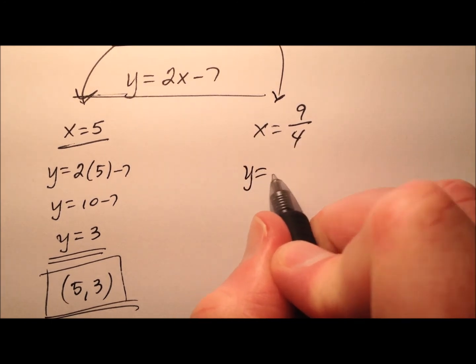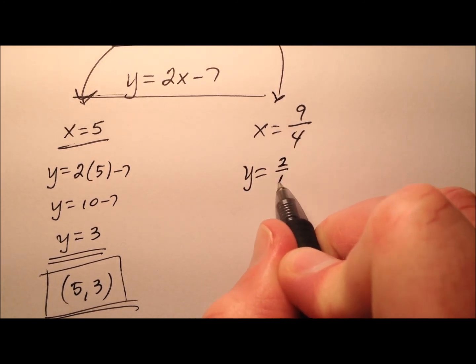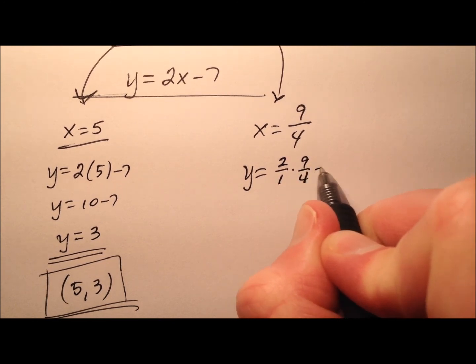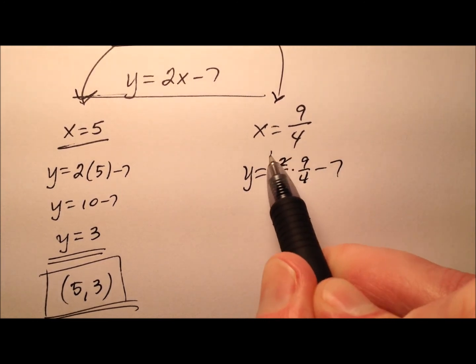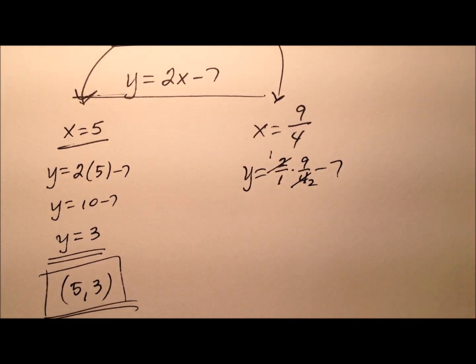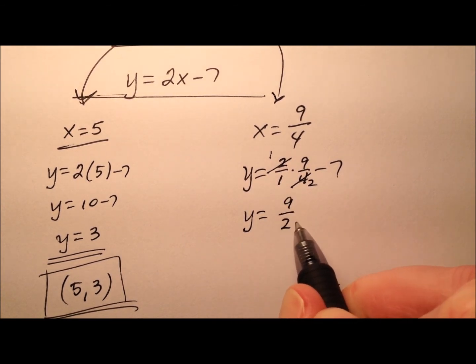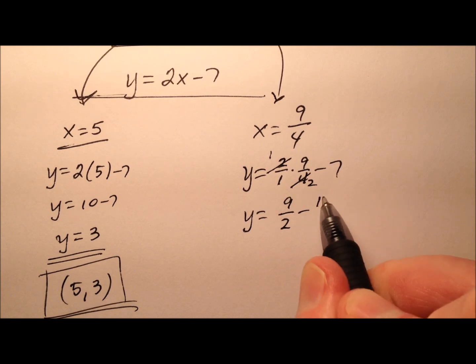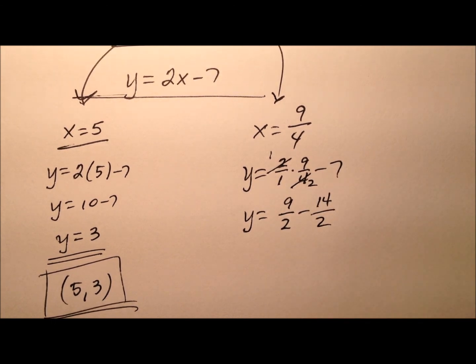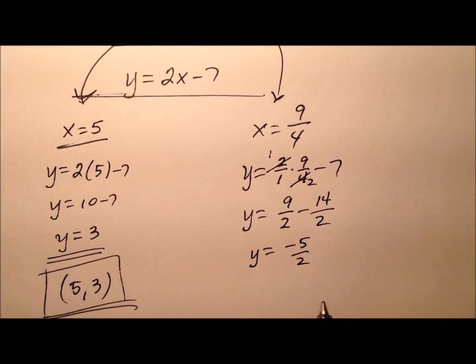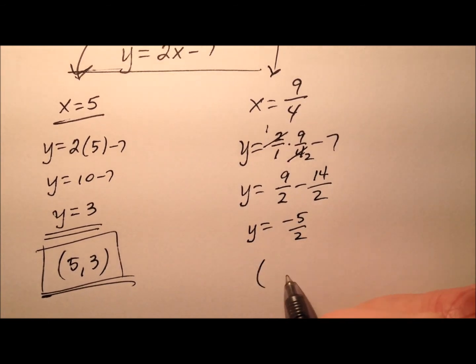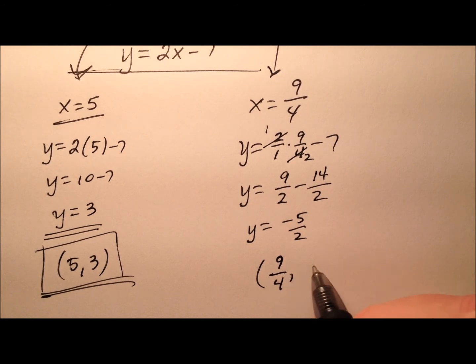How about 9 fourths? Well, it's 2 times x. So 2 over 1 times 9 over 4 minus 7. Of course we can do a little simplifying before we multiply. So y equals 9 halves minus 7, which when I get common denominators ends up being minus 14 halves. So it looks like y equals negative 5 halves. And my ordered pair solution will be 9 fourths negative 5 halves.